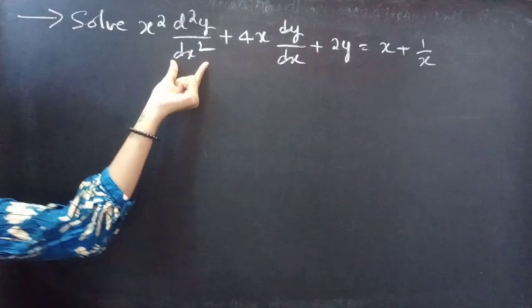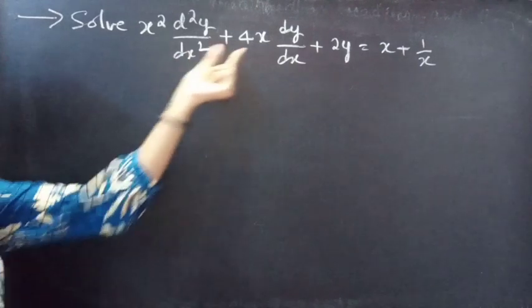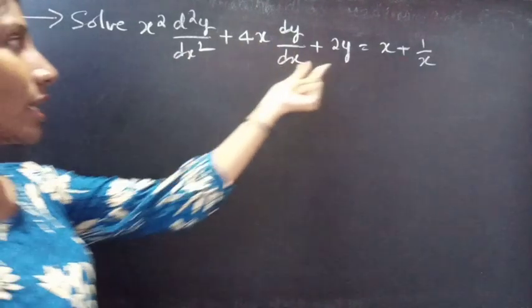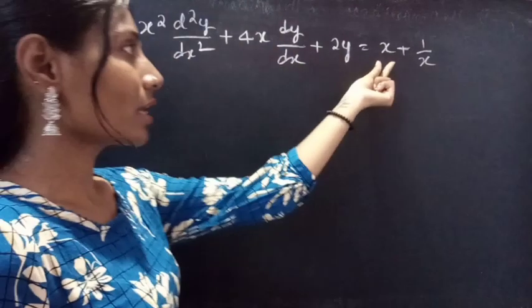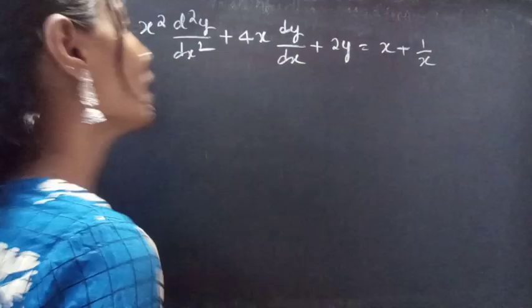The problem to solve is: x squared times d²y/dx² plus 4x times dy/dx plus 2y equals x plus 1/x.